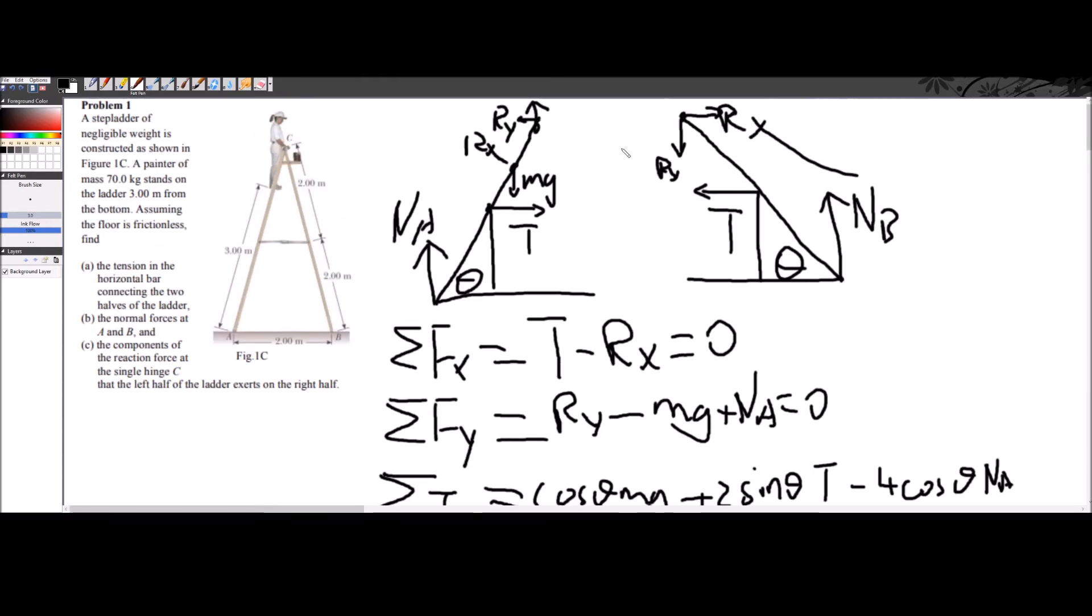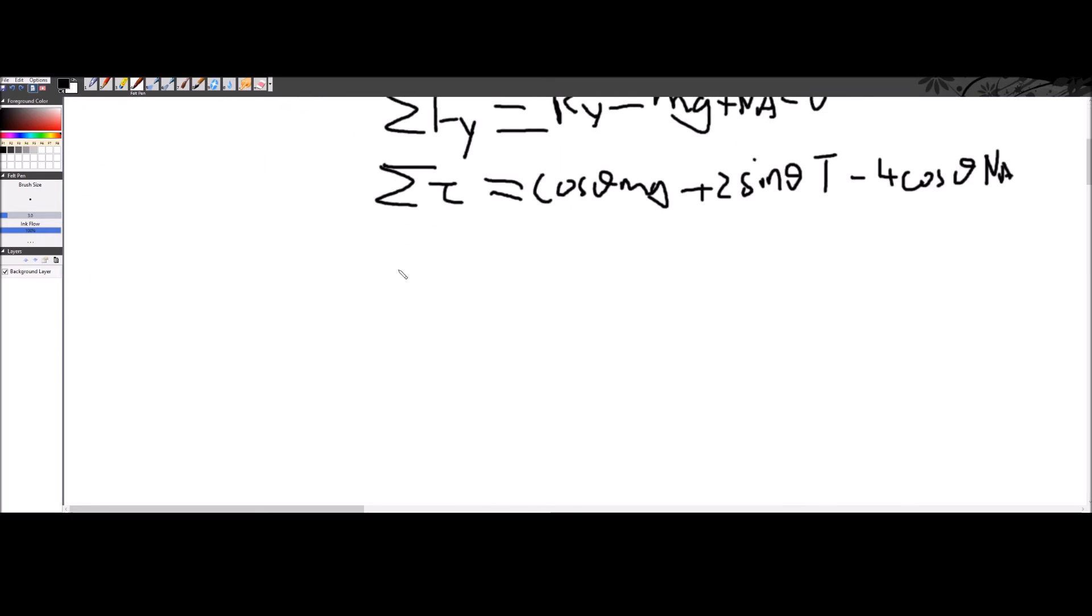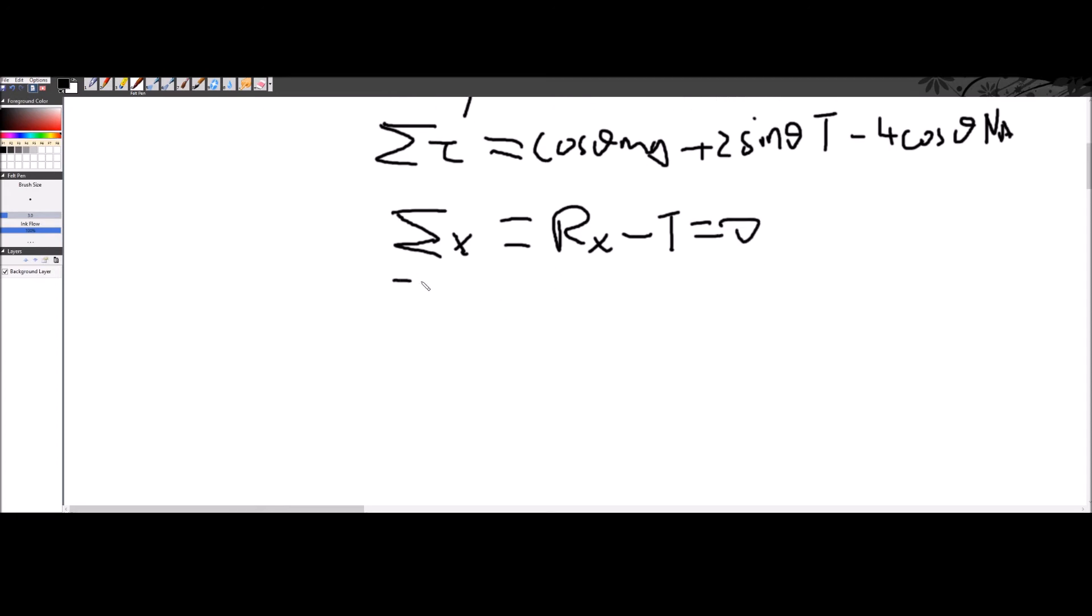Now we can just do the same for the right diagram as well. So we look at the force in the x direction, tension is going this way, and x is going this way. For y direction, Nb is going up, and ry is going down. So let's write the statements. So for the right side, fx is going to be equal to rx minus T, which is equal to 0. And in the y direction, it's just going to be equal to the normal force b minus ry is going to be equal to 0.